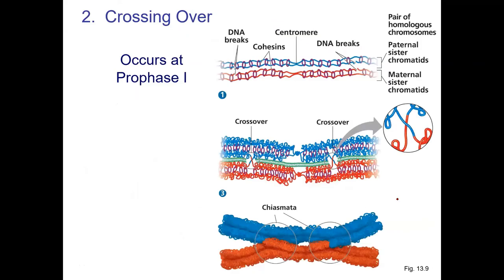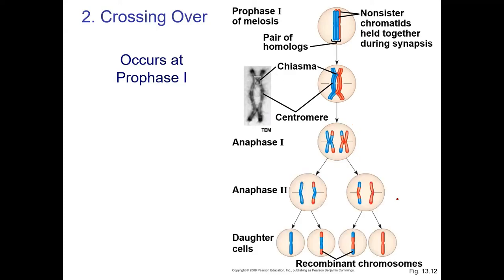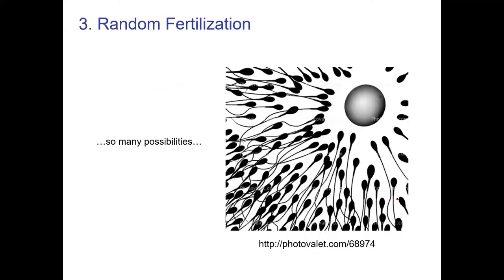The second thing contributing to genetic diversity is crossing over. Little bits of chromosomes trade places, so you may not get your full maternal chromosome — you may end up with your maternal chromosome with little bits and pieces of the paternal chromosome mixed in. This mixing and matching contributes to genetic diversity, and in the end all daughter cells are genetically distinct. The third mechanism is random fertilization — which egg drops versus which sperm fertilizes it is all part of the whole process.